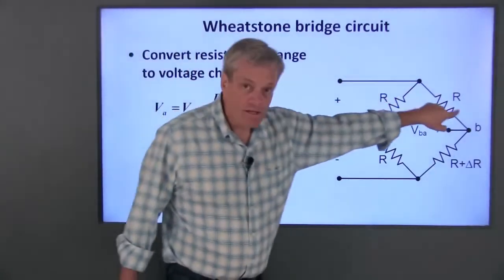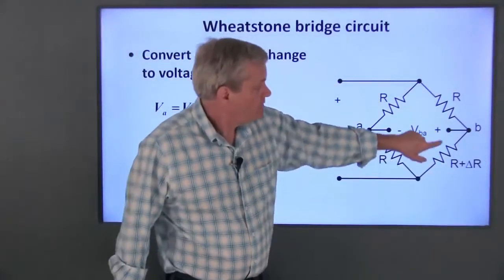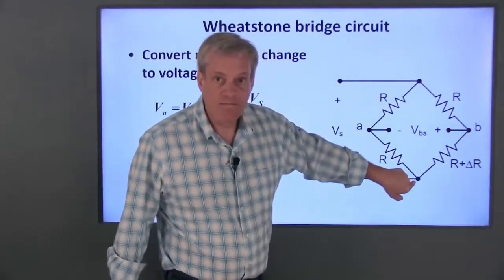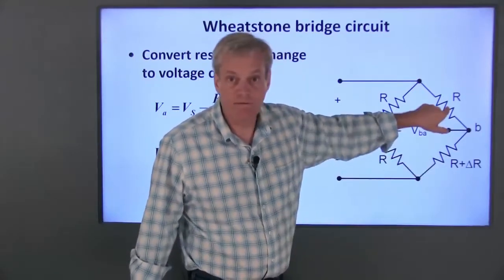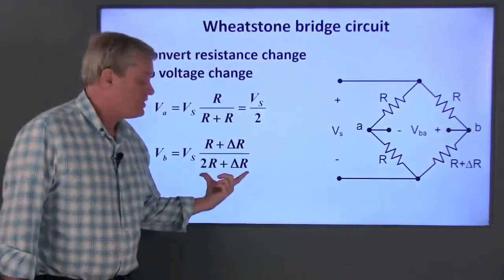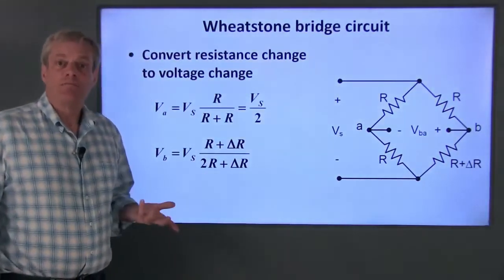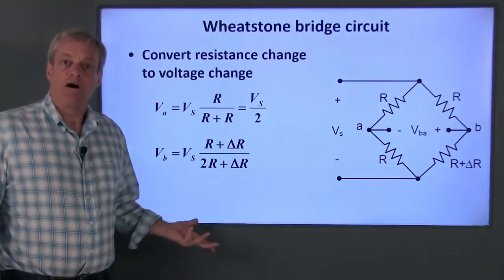This side of the circuit is also a voltage divider. So V sub B is equal to V sub S times this resistance R plus delta R over the sum of these two resistances. So V sub B increases as delta R increases.